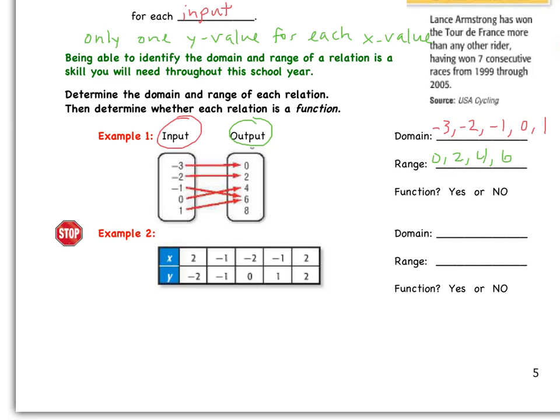Finally, we have to determine whether or not this is a function. So remember, for each input, there is only one output. When we input negative three, out comes a zero. Nothing else. If we input negative two, we get positive two. If I plug in negative one, I get six. If I plug in zero, I get four. And finally, when I plug in one, I get six. Nothing else. Therefore, it meets the criteria of a function. For each input, there is only one output value.